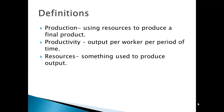Here are a few definitions you will require to know in the exam. Production is using resources to produce a final product. Productivity is output per worker per period of time. Resources are something used to produce an output. So all this production is about how we get raw materials to make a finished product.